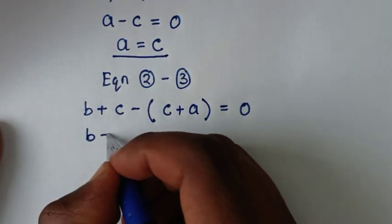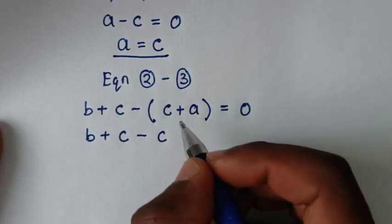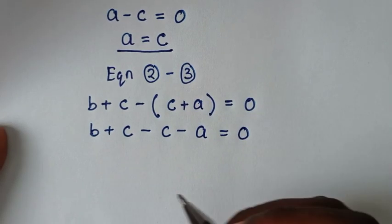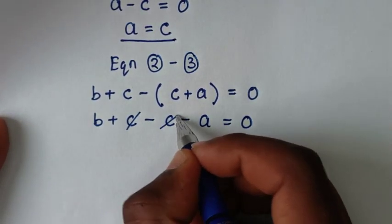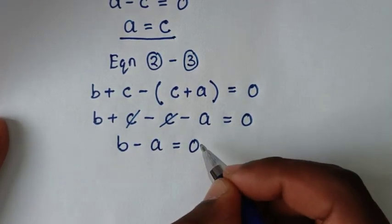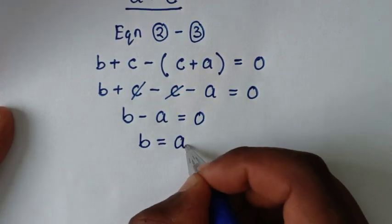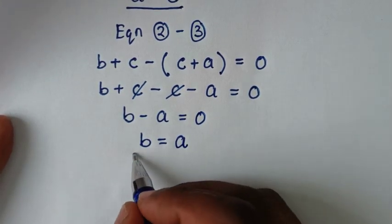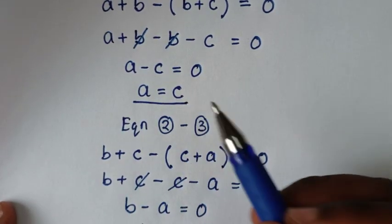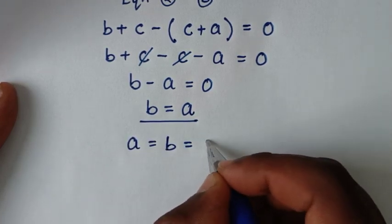Then from here it will be b plus c; distributing the negative inside the bracket gives minus c minus a, equal to 0. Then c minus c cancels, so it will be b minus a is equal to 0, meaning b is equal to a.